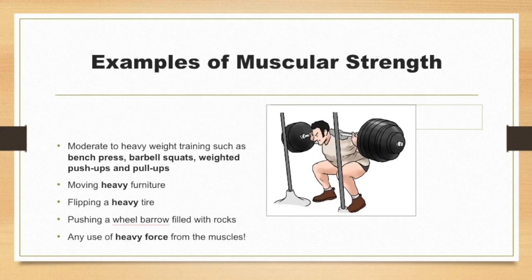Here are some examples of muscular strength: moderate to heavy weight training such as a bench press or a barbell squat, weighted push-ups, and pull-ups — we practice those in class. Also moving heavy furniture, flipping a heavy tire, pushing a wheelbarrow filled with rocks. Any heavy force from the muscles is muscular strength. It's also good to remember that strength sounds quite like strong — strong and strength — a good way to help you remember it.